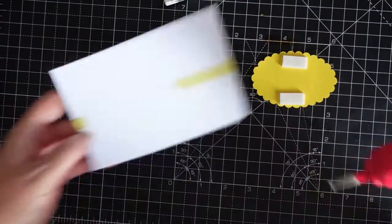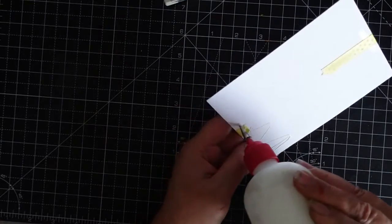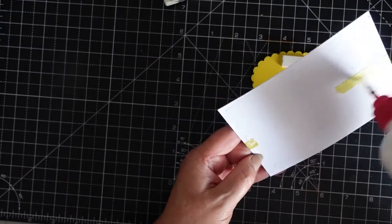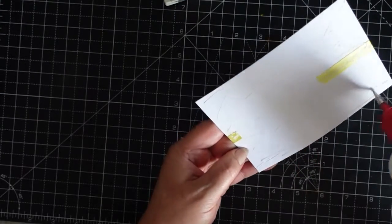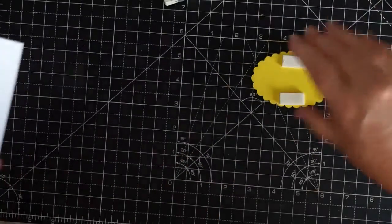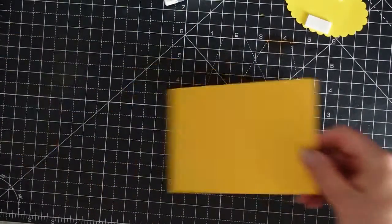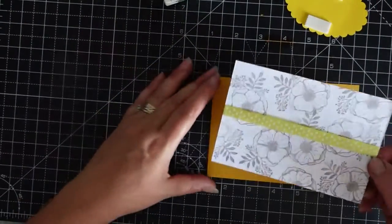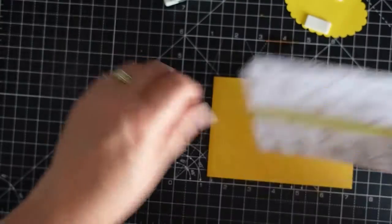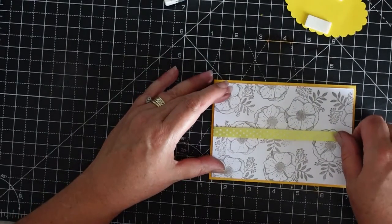Stick that down, plenty on where the ribbon is, because it can come loose after a time if you're saving your cards. Place that down there.